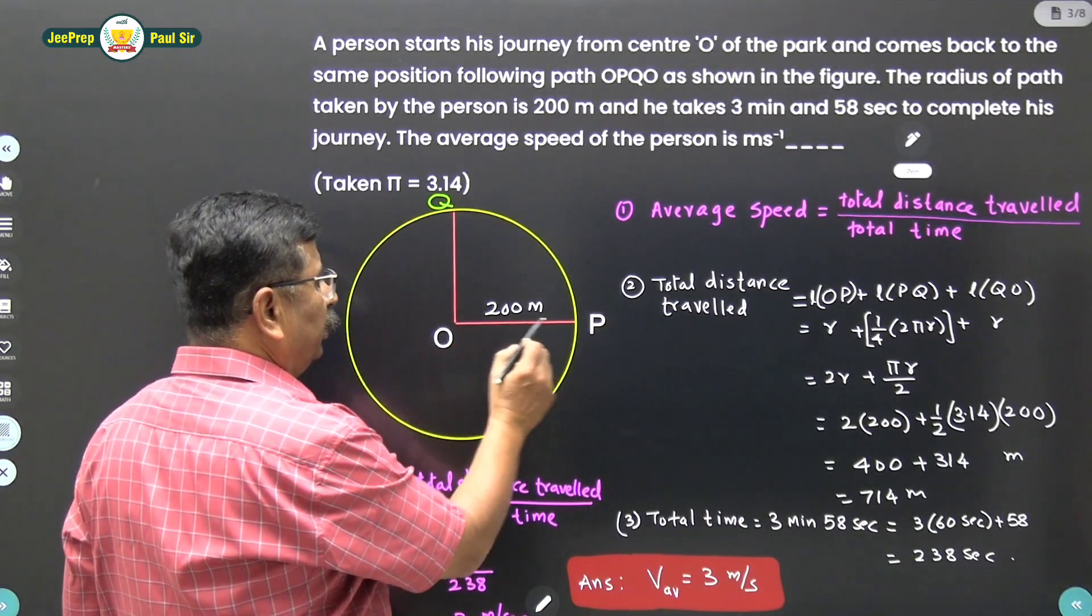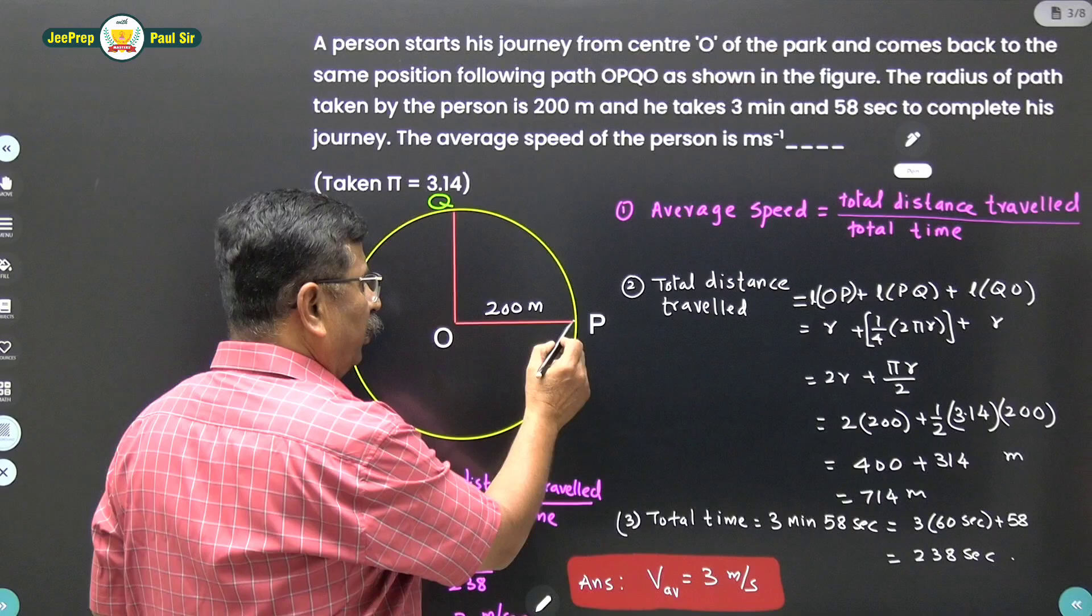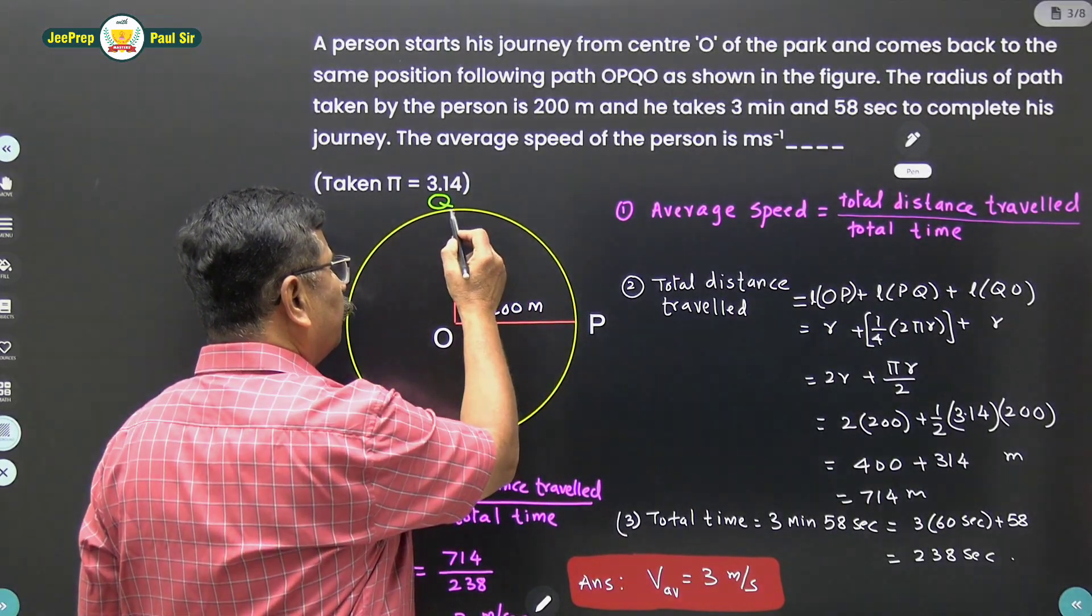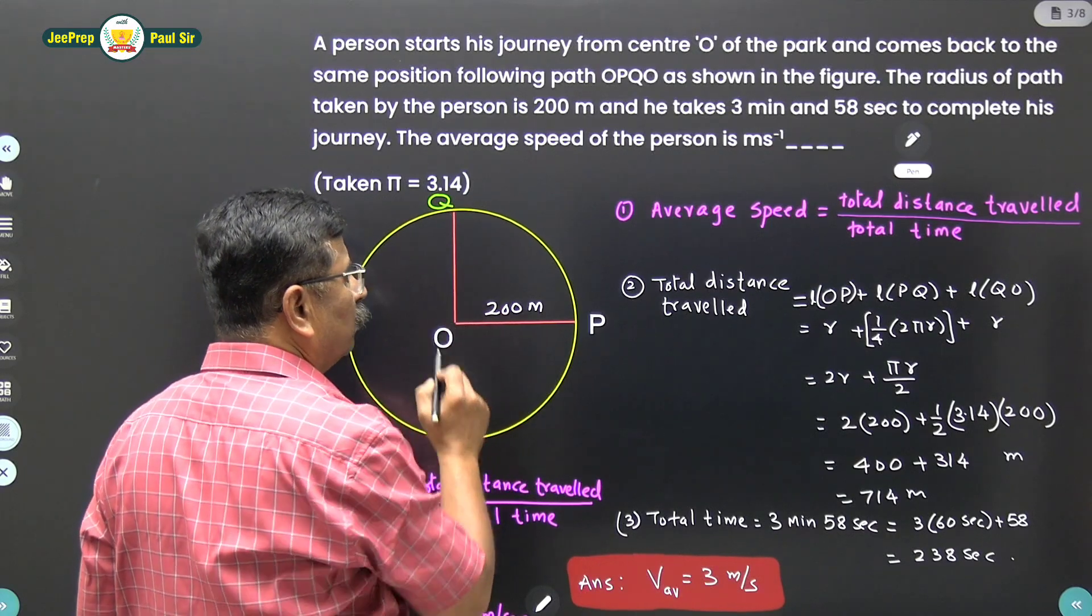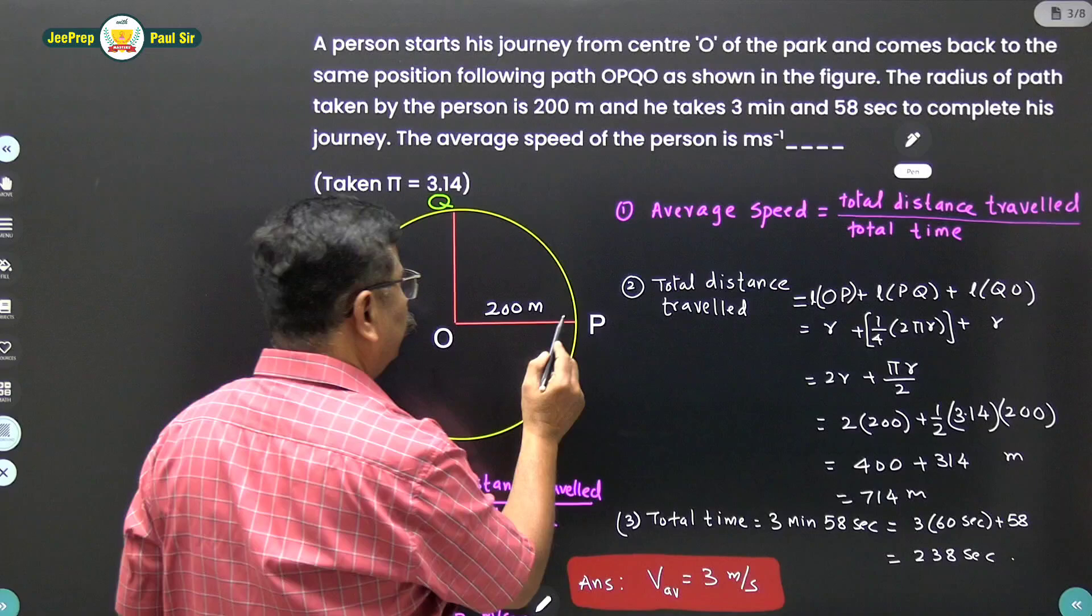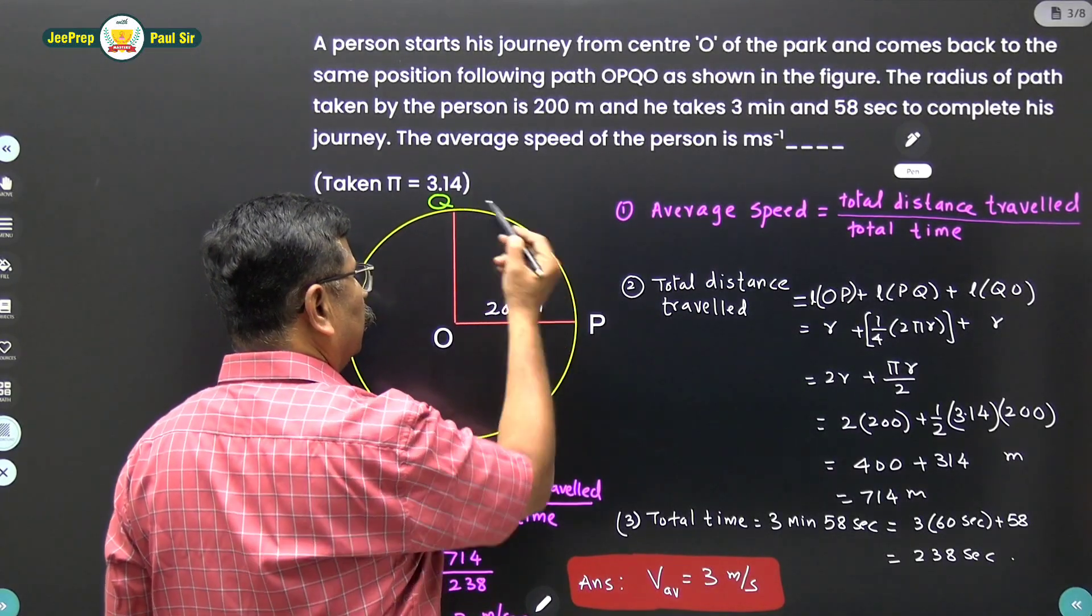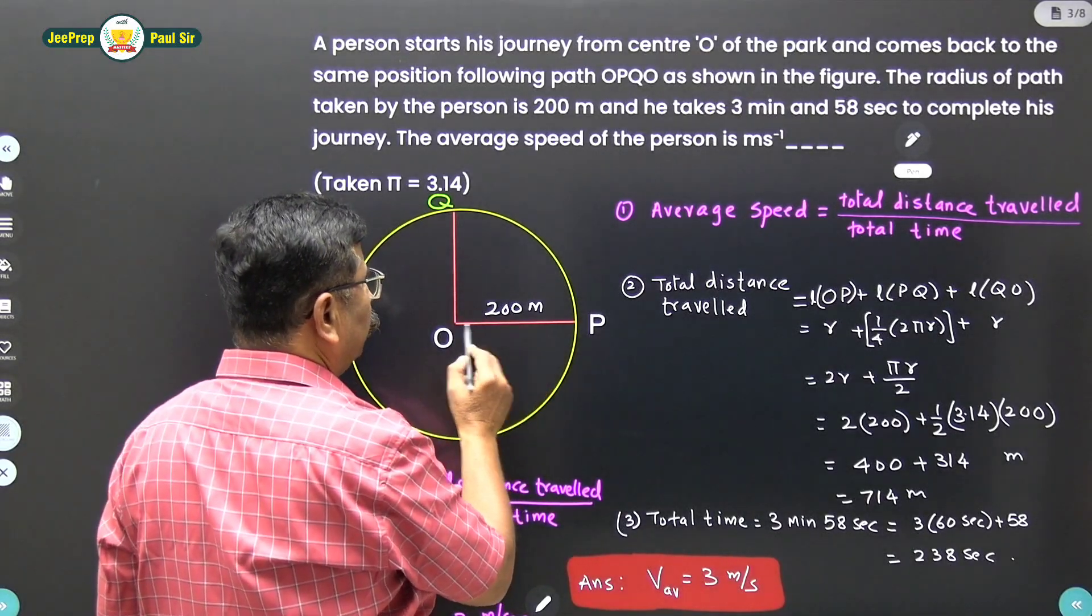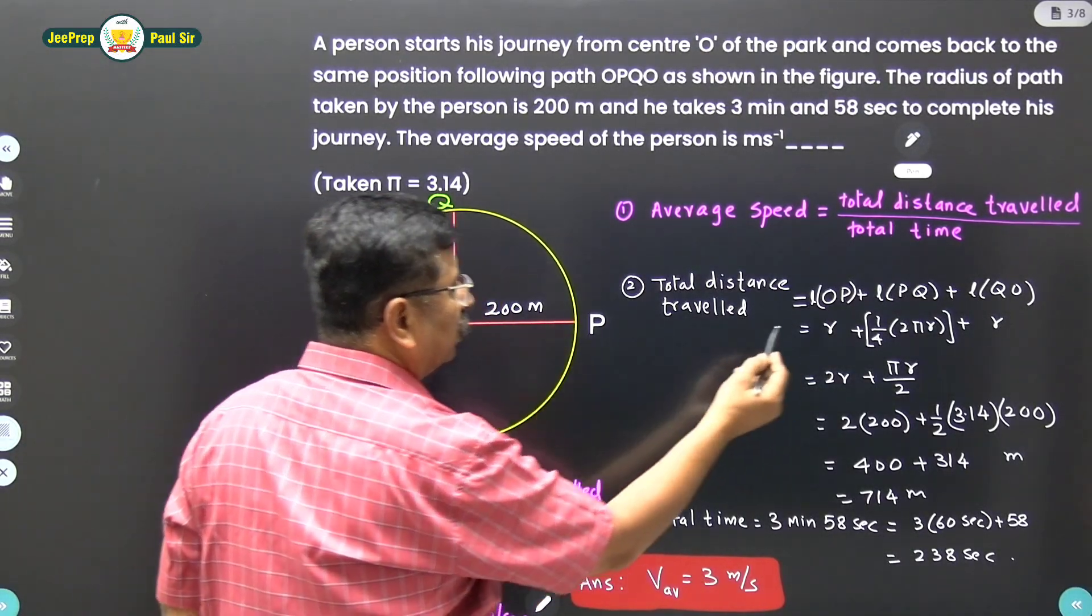So the person starts from point O, reaches point P means he has covered 200m, then he moves along the arc PQ and then he comes back to O. Hence the total distance traveled is equal to length OP plus this arc length PQ plus length QO. So length OP and QO are the radius.